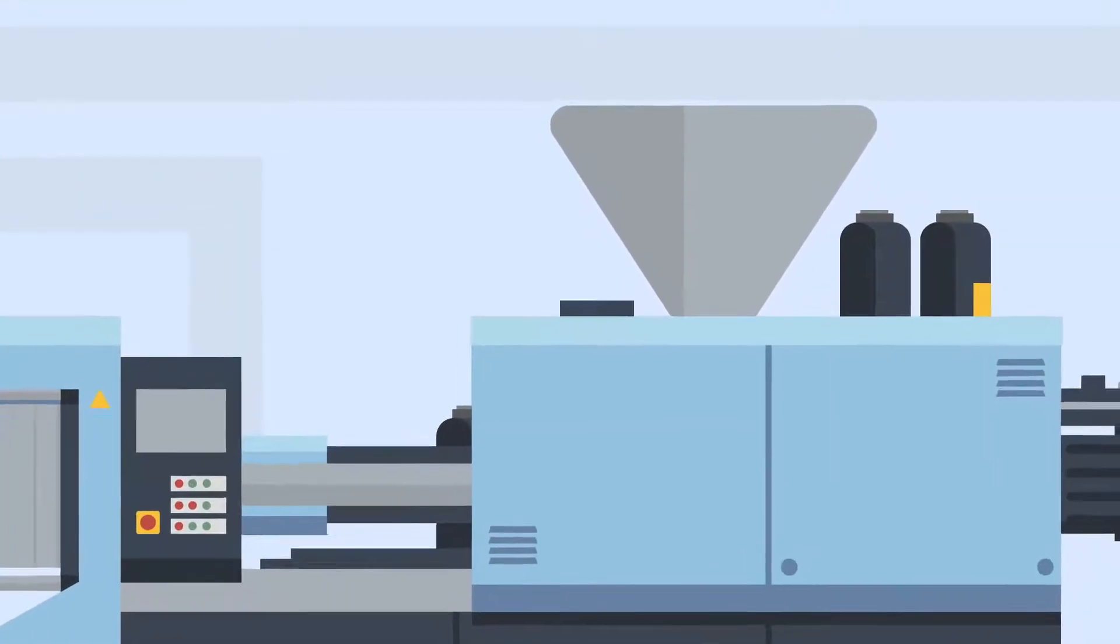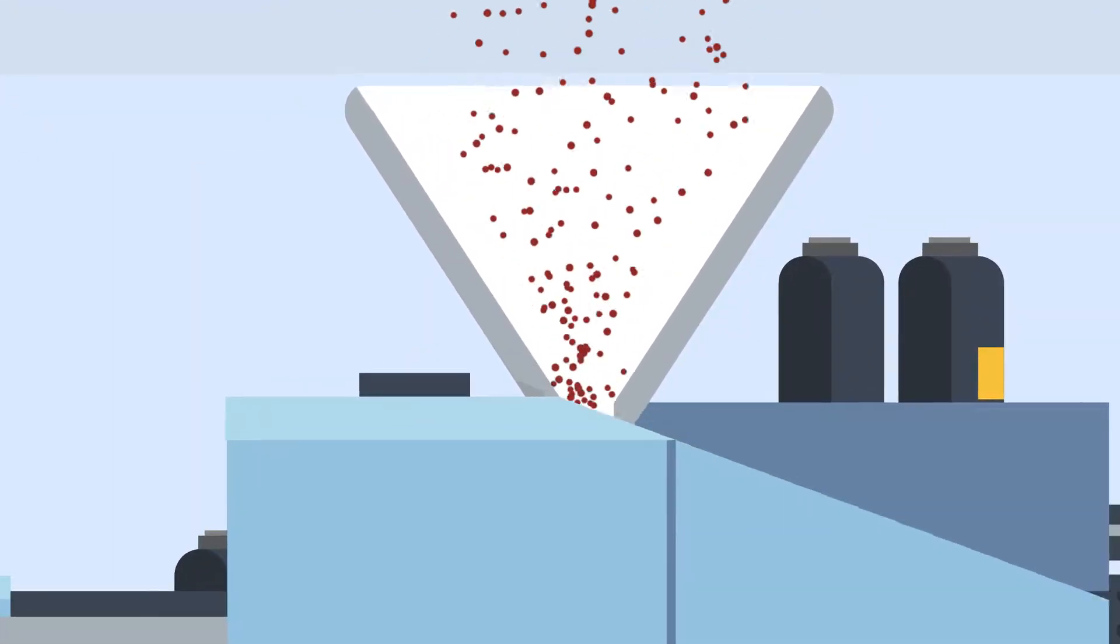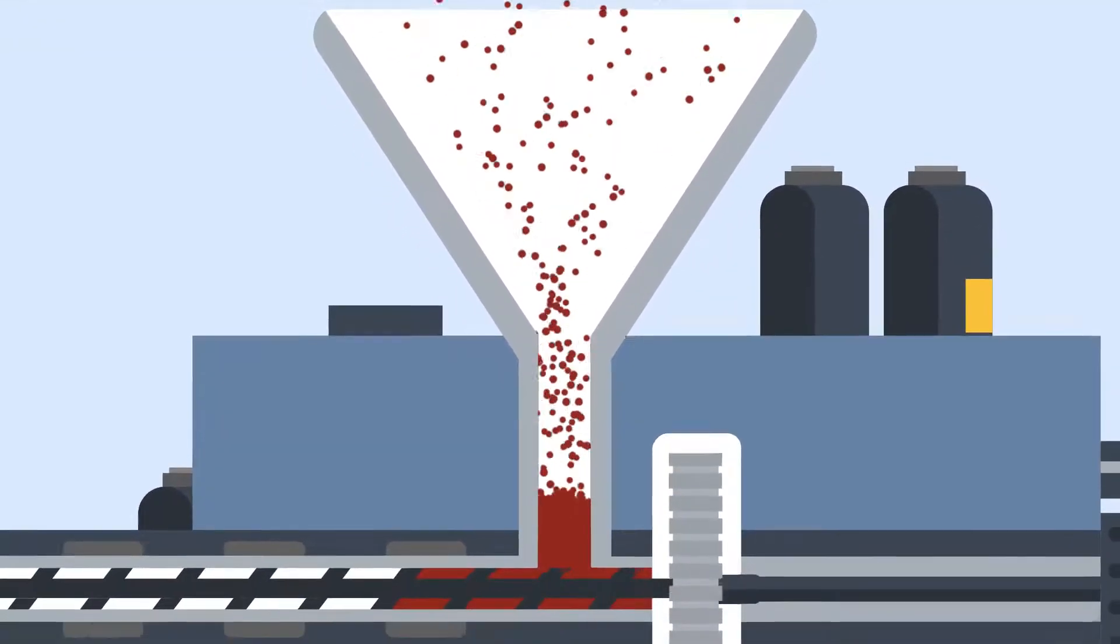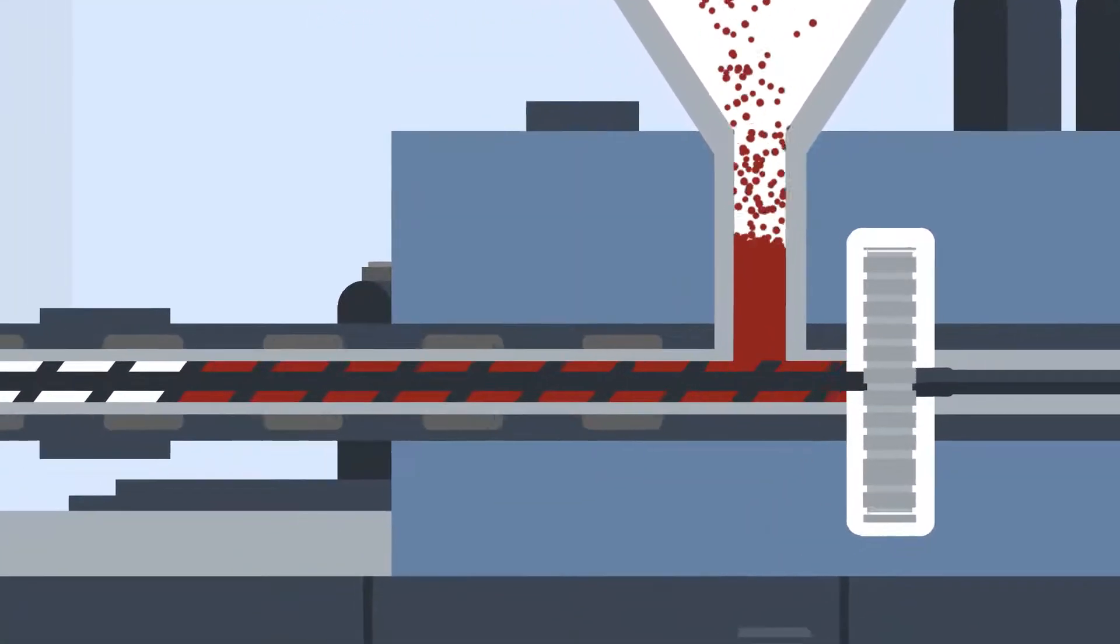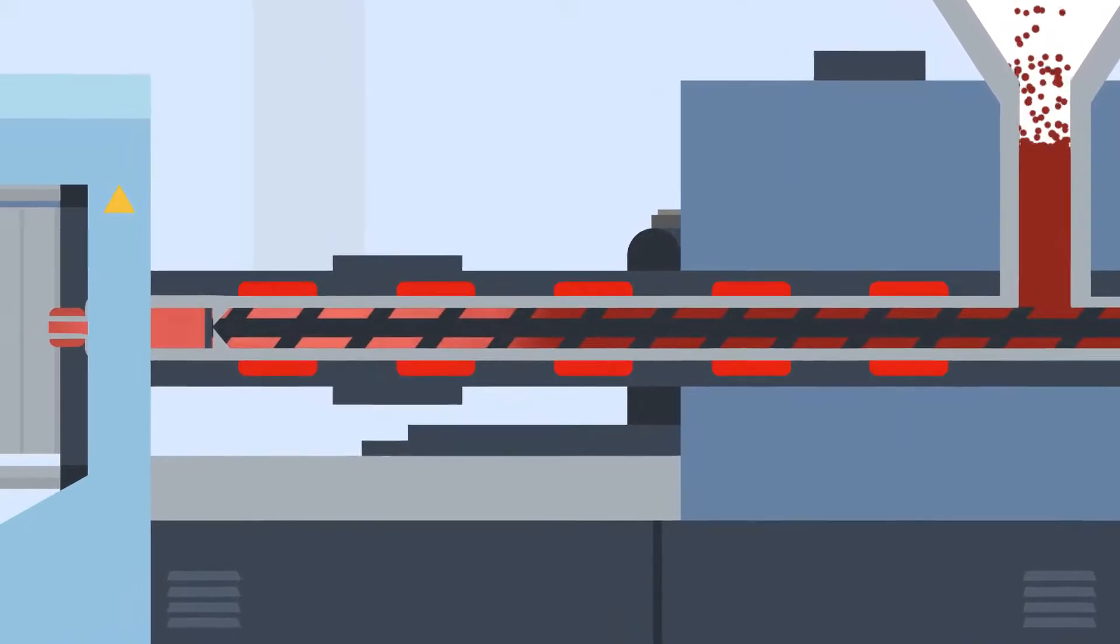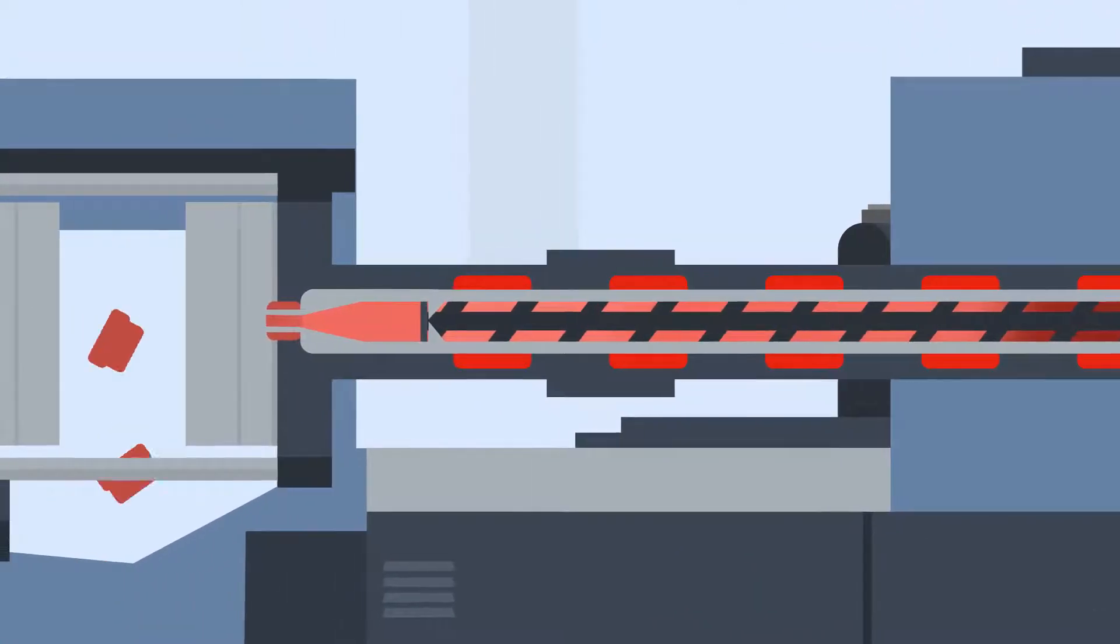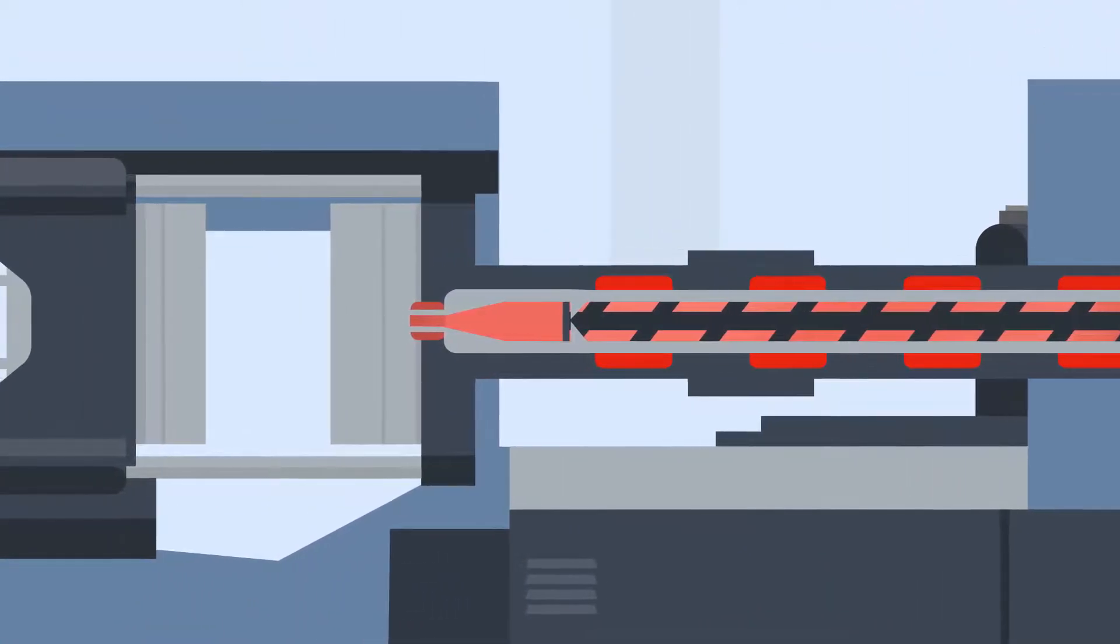First, raw plastic pellets are poured into the hopper at the top of the machine. This can be one type or a combination of different plastics. The pellets are then heated within a temperature-controlled cylinder, called the machine barrel, until it is molten.